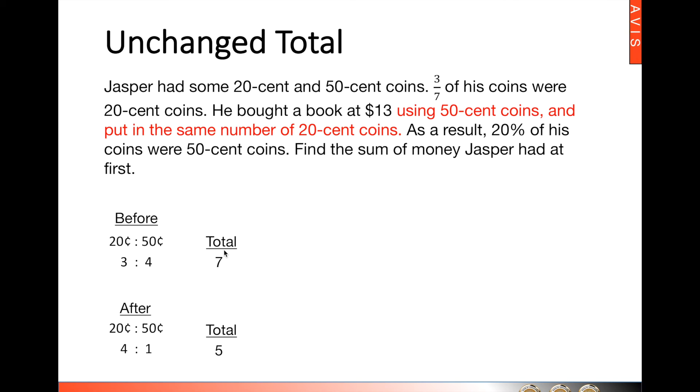So what we need to do is to make the total units the same. We look for the lowest common multiple of 7 and 5. In this case, it is 35. So we multiply the before units throughout by 5 and the after units throughout by 7. So what we will get is 15 to 20, the ratio for before, and 28 to 7, the ratio for after.